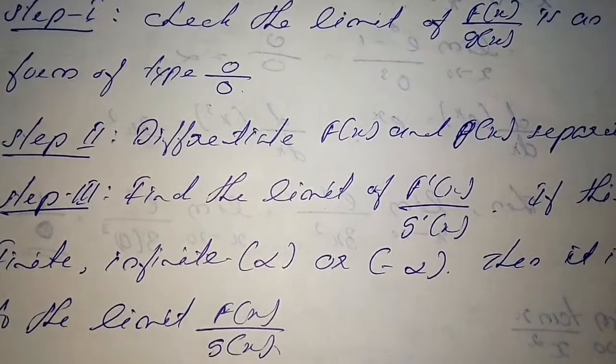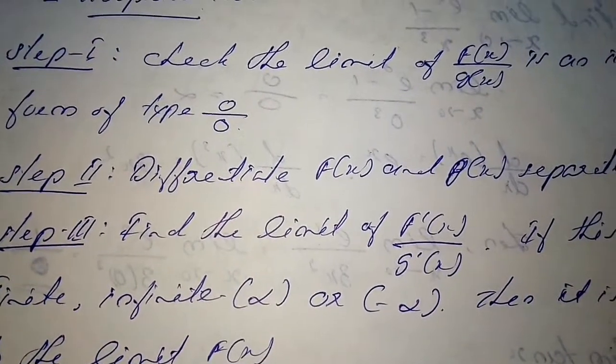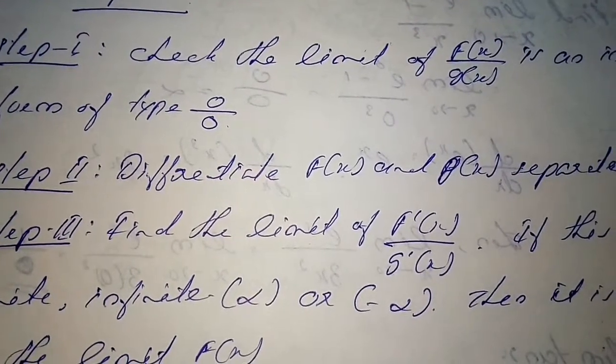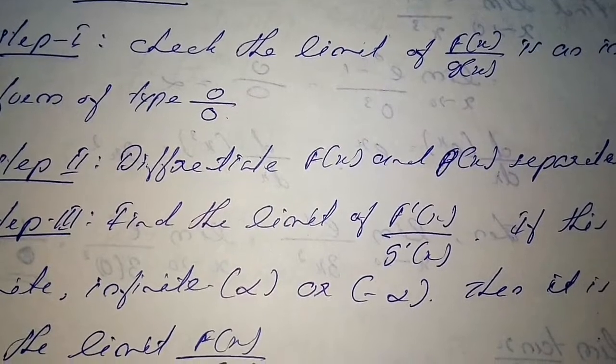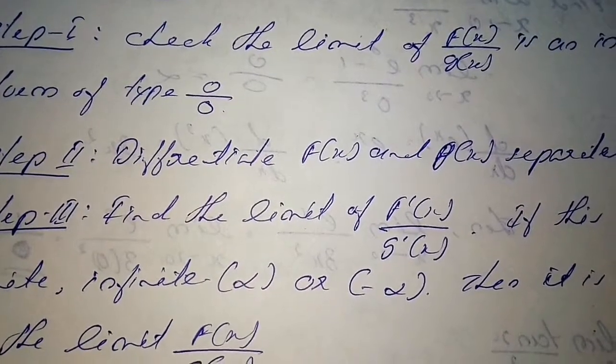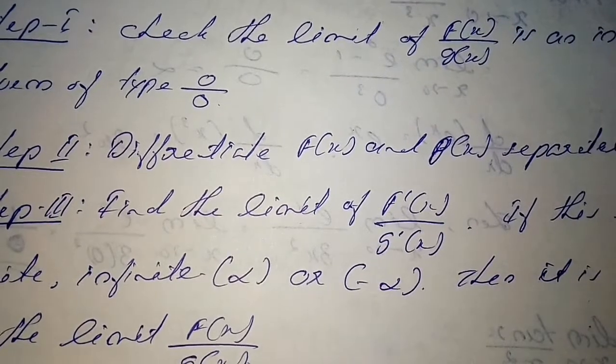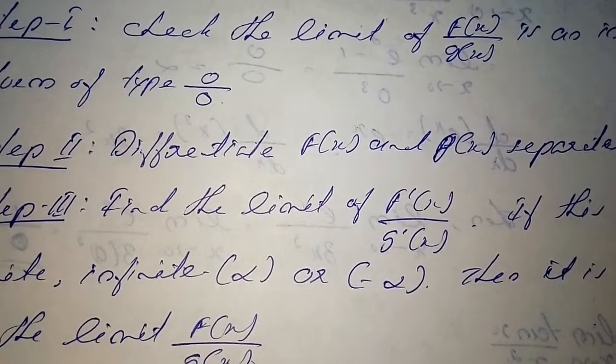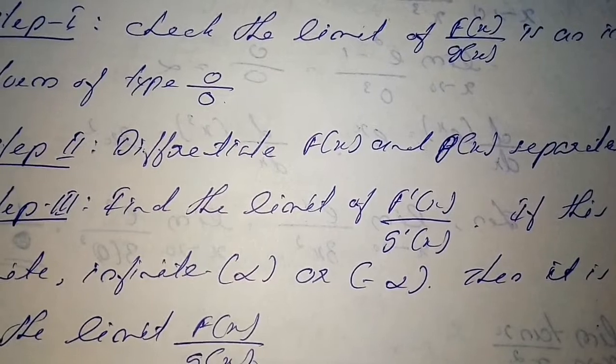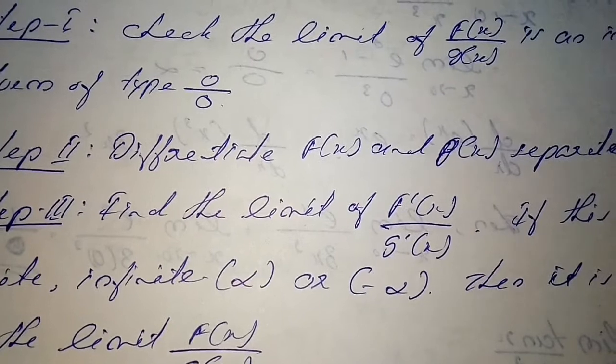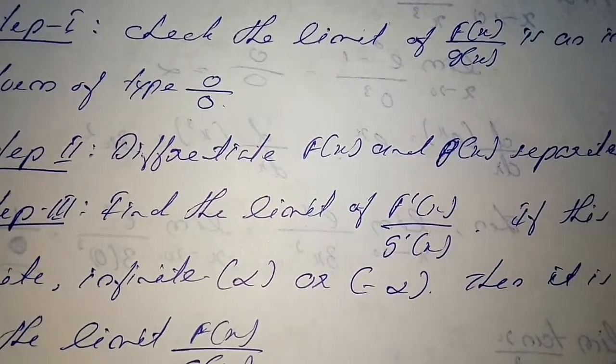You have to use L'Hospital's rule. Step one: confirm that the value is 0/0 by doing the limit. Step two: if you arrive at 0/0 form, then differentiate f(x) and g(x) separately. I'm repeating - separately.